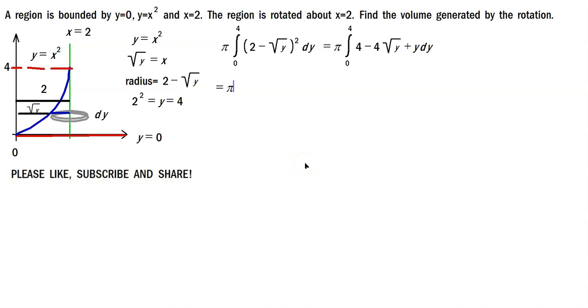And then down below, it continues, so pi, and then you're going to do the antiderivatives, so 4y minus 4y raised to the 1 half plus 1 over, let's see, 1 half plus 1, and then plus 1 half here of y squared, and then you're going to evaluate this between the limits of 4 and 0 this way.